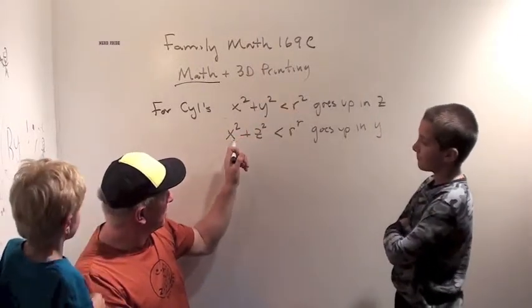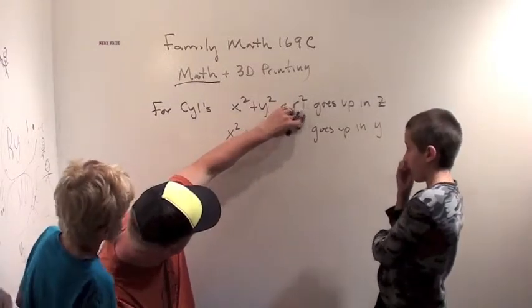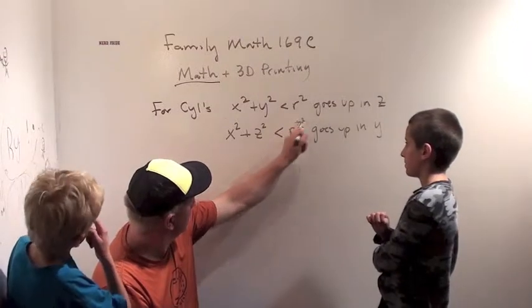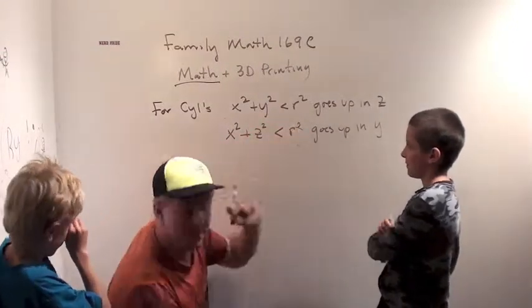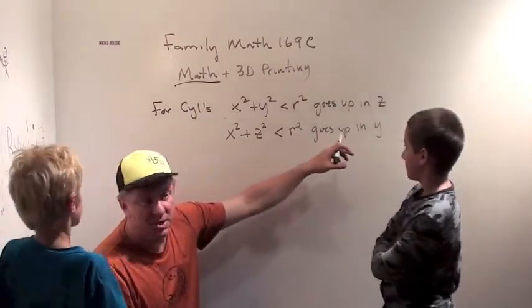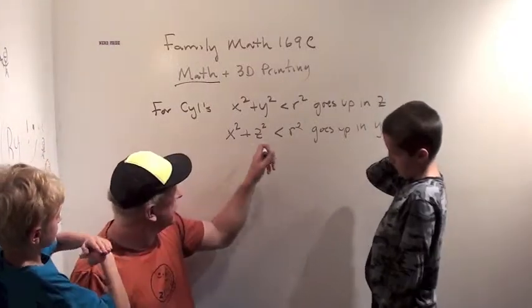Now, when we switched it, we said x squared plus z squared is less than r squared, then we got something that went up in the y direction. And by up, the y direction was across, it went across, because y was unconstrained.